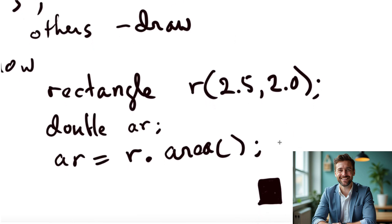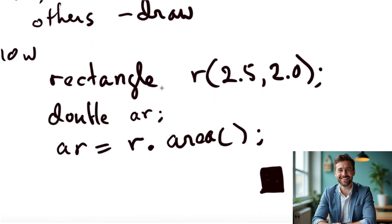And now in our main program we might declare rectangle as R and we give it things to initialize 2.5 and 2.0. We might have a variable where we're going to compute area. And then we could say AR equals and we use the dot notation which is the same notation that you use in C with structs.